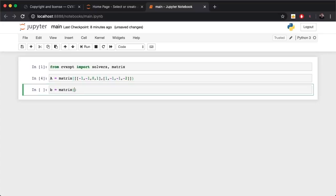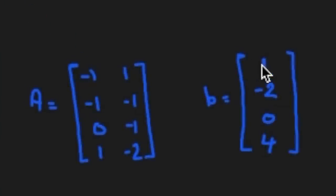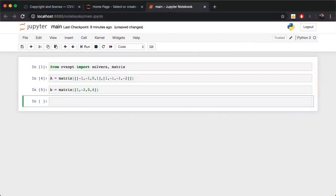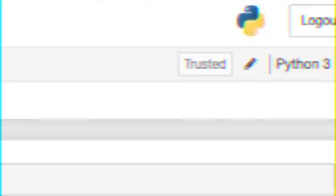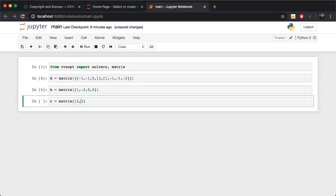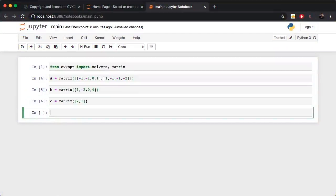We'll run this and let's take a look at A, it's a matrix, okay good. Now let's fill in b which is a vector: we're calling matrix, it's a one column matrix 1, -2, 0, and 4. And c is 2 and 1. So we've got our A, b, and c.